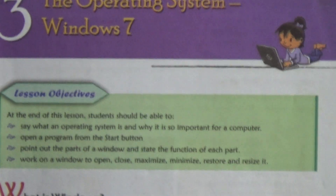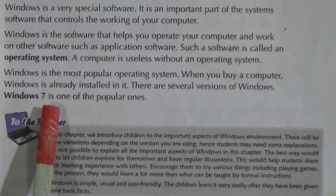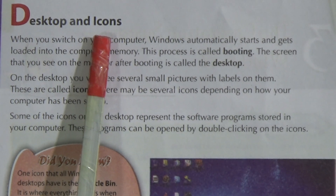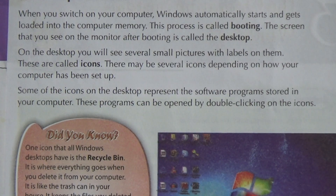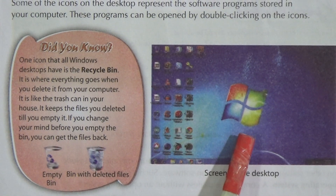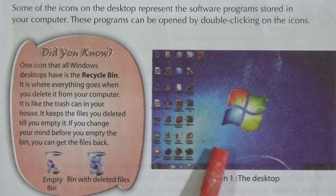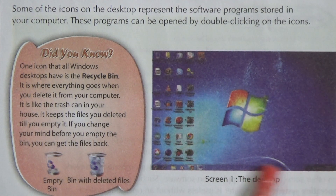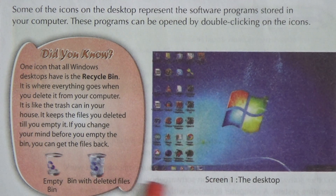So in this chapter we saw what Windows is — Windows is a system software, an operating system, and Windows 7 is one of the popular ones. We also learned about desktop and icons. When you turn on the computer, the process is called booting, and then the screen that comes is called the desktop. On the desktop you have small pictures with labels called icons, and at the bottom of the screen there is a long bar called the taskbar, where you have the start menu.